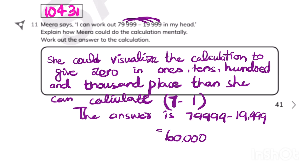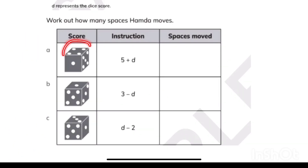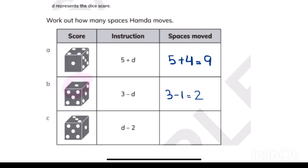Now I'm ready to start exercise 4.2: using letters to represent numbers. D means dice, and whatever is showing on the top side of the dice, you use that number. In part 1, 5 plus D — the dice is showing 4, so 5 plus 4 equals 9. Three minus 1 is 2, and 3 minus 2 is 1. Because it was a game, write 9 spaces, 2 spaces, and 1 space.